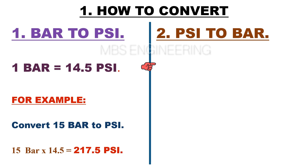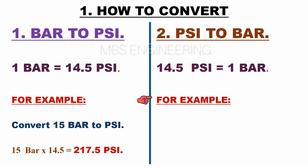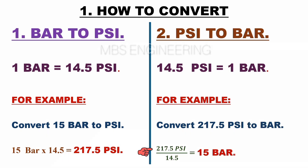Next, we will learn how to convert PSI to bar. Please remember that 14.5 PSI is equal to one bar. Sample example: convert 217.5 PSI to bar. 217.5 PSI divided by 14.5 — therefore the obtained pressure value is 15 bar.